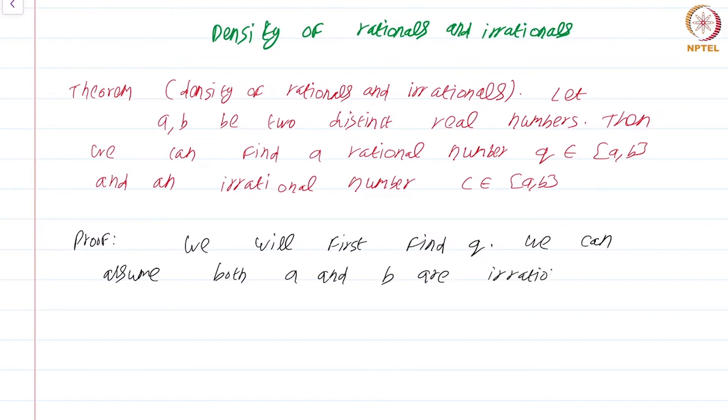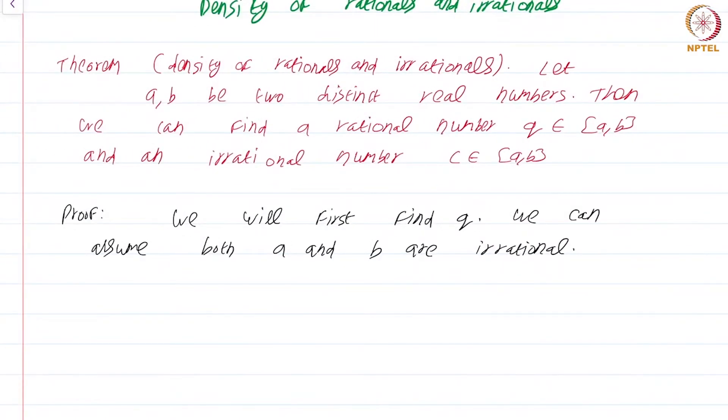Please pause the video and think about why we can make this assumption. If either a or b is rational, then you can just choose that to be the required rational number q. Further, we can assume both a, b greater than 0.